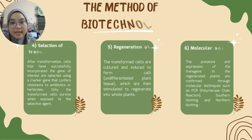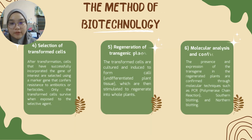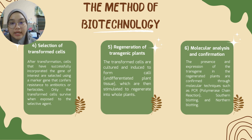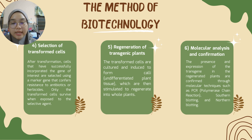Next is selection of transformed cells. After transformation, cells that have successfully incorporated the gene of interest are selected using marker genes that confer resistance to antibiotics or herbicides. Only the transformed cells survive when exposed to the selective agent.